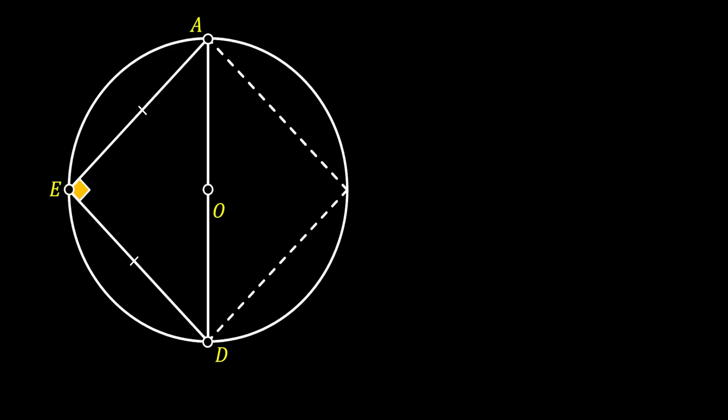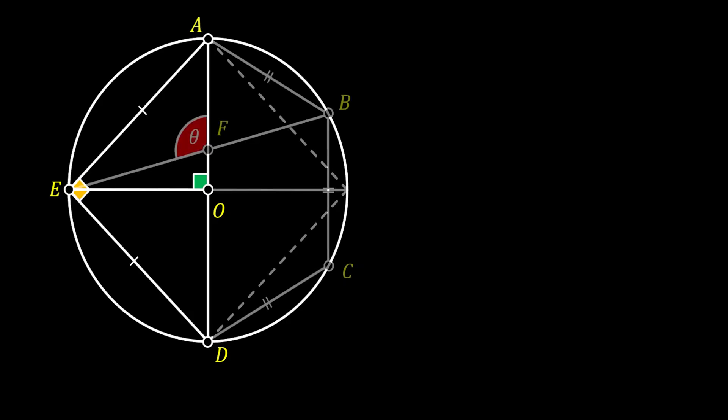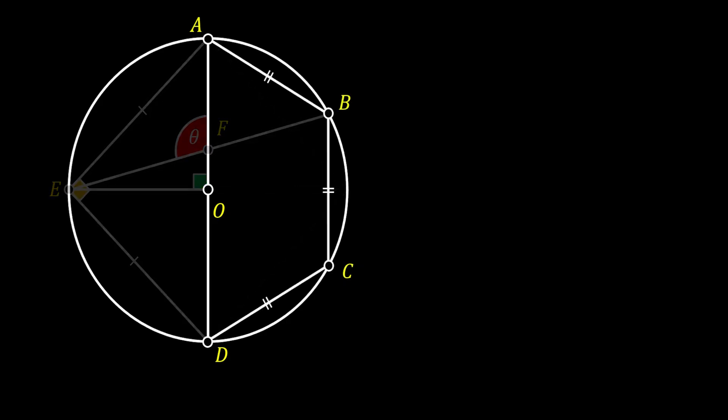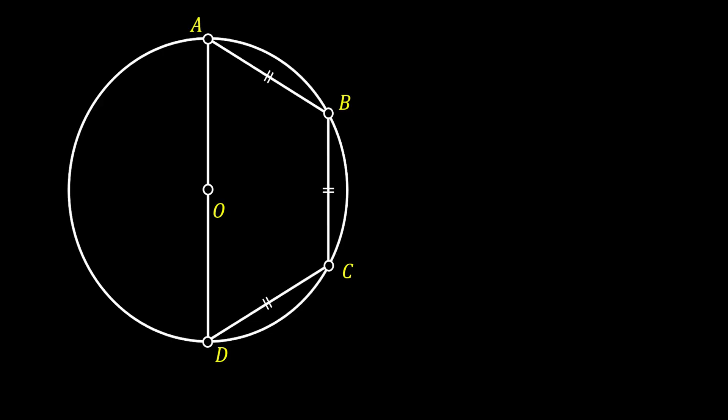If we pull the horizontal diagonal of our square, it will also represent the diameter of the circle. More importantly for us, it will bisect our other diagonal AD at a right angle. Now let's go back to our original sketch and this time we will only keep the right side of the sketch.